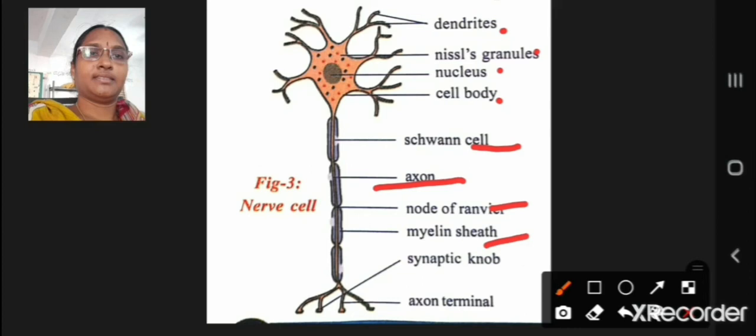The nerve cell body lies in our brain. This part lies in our brain or spinal cord and very close to the spinal cord.